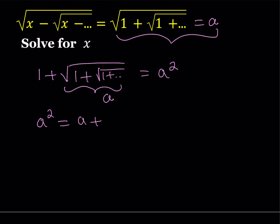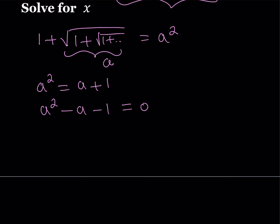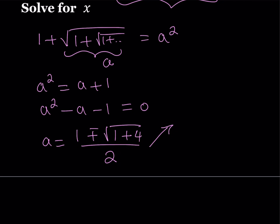This is the equation I'm getting. It's easy to solve — get everything on the same side and use the quadratic formula. It's not factorable. Applying the quadratic formula: negative b gives 1, plus or minus the square root of b squared minus 4 times negative 1, which is positive 4. So I get two solutions: a equals 1 plus root 5 over 2, or a equals 1 minus root 5 over 2.